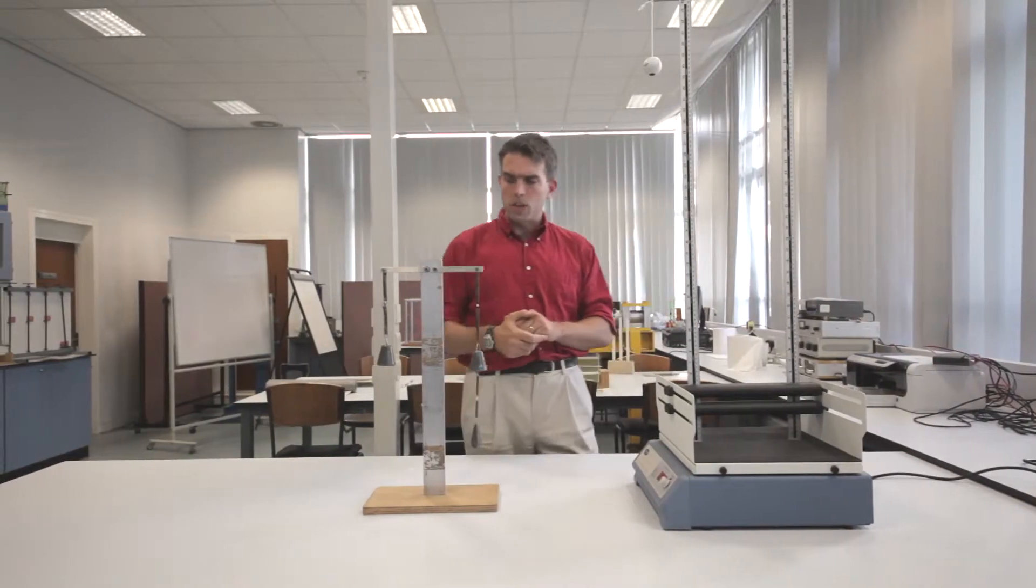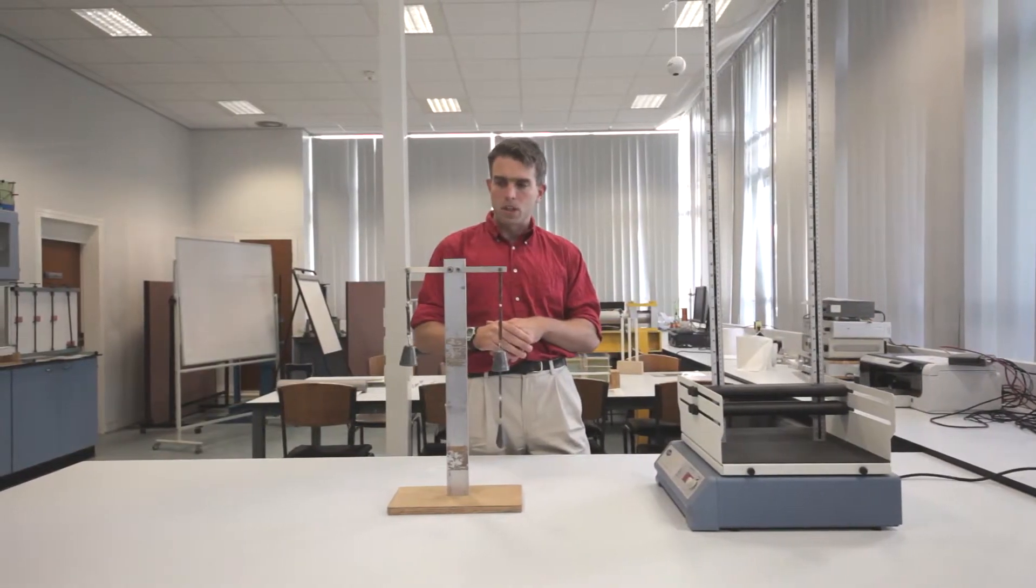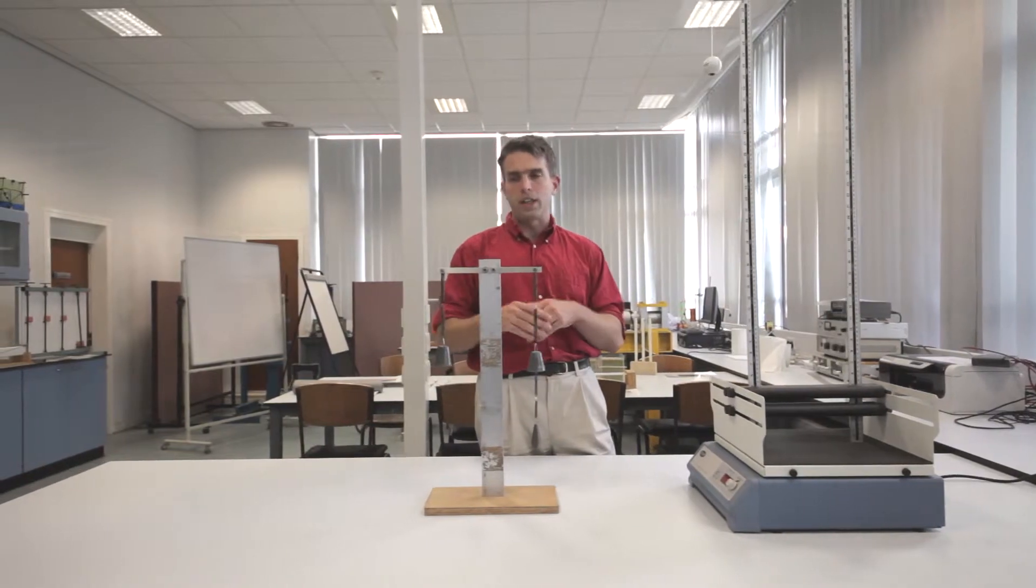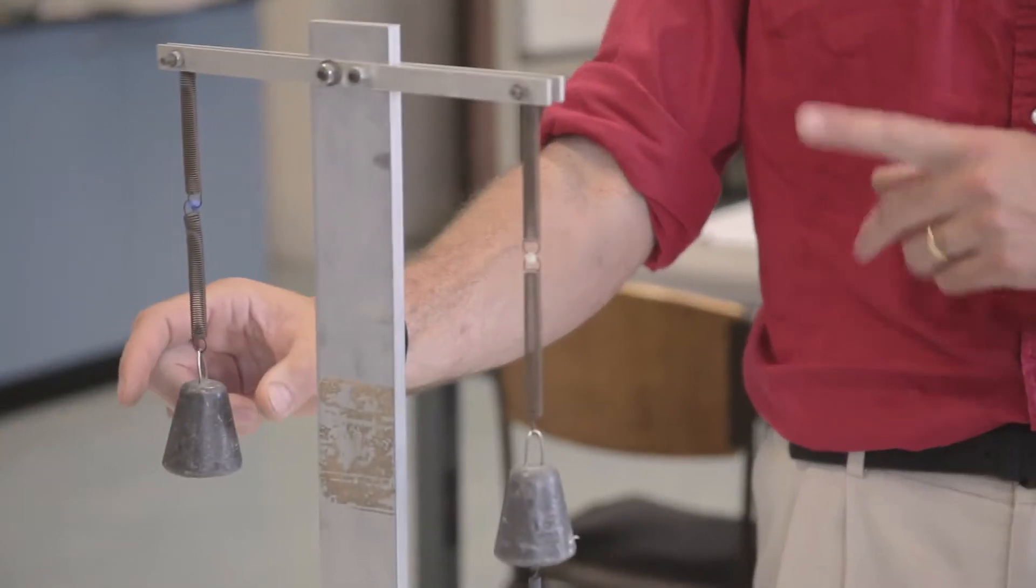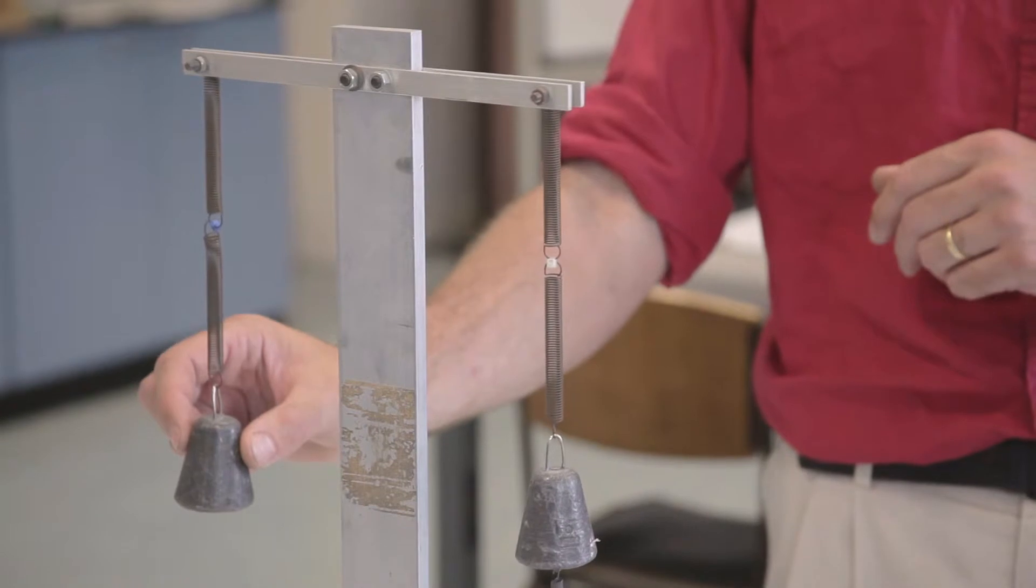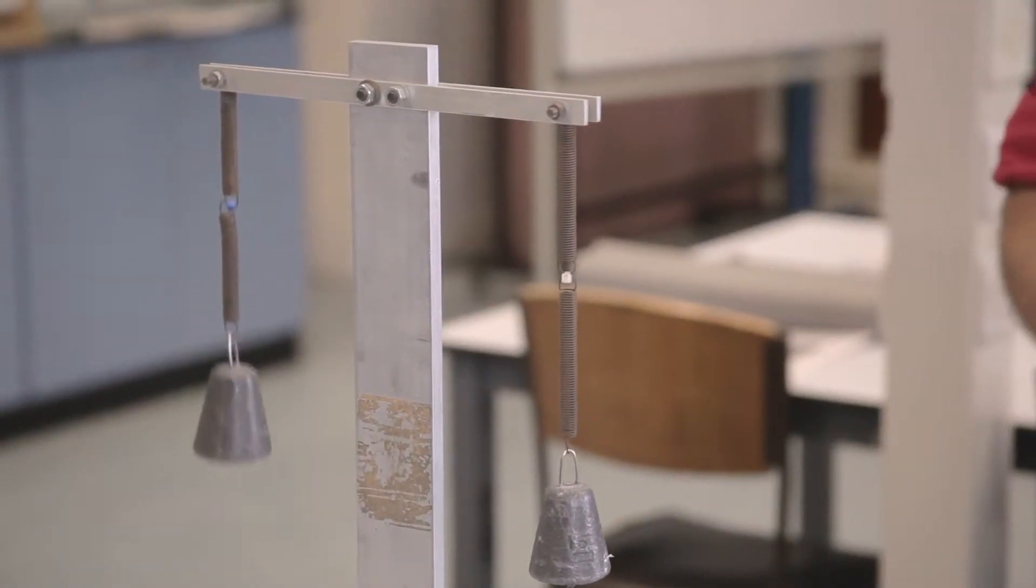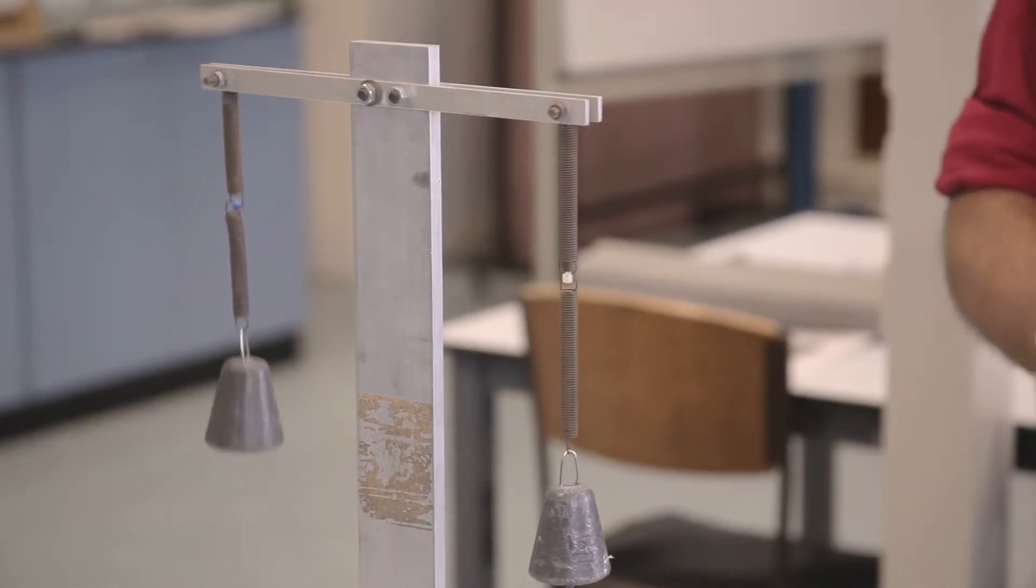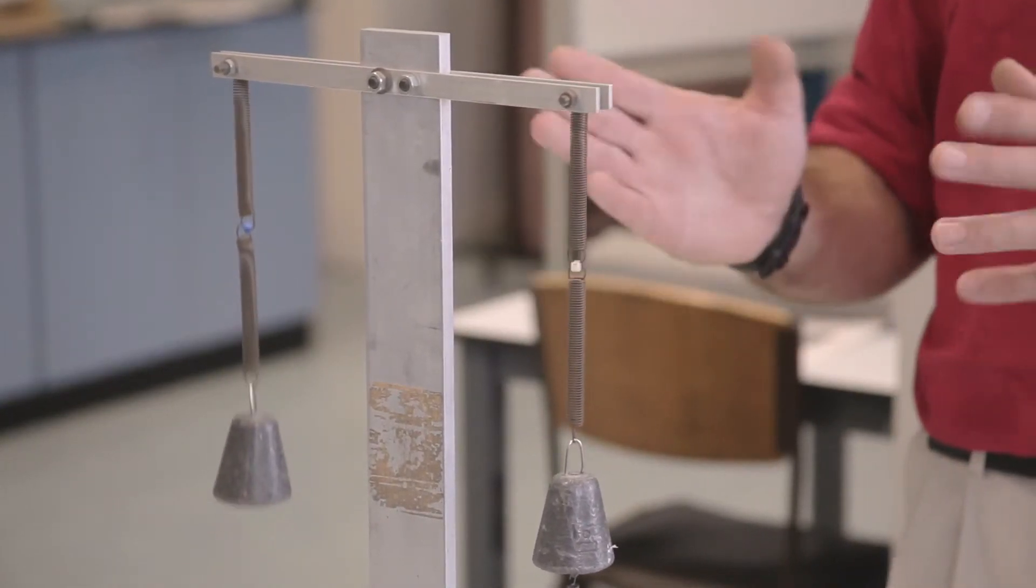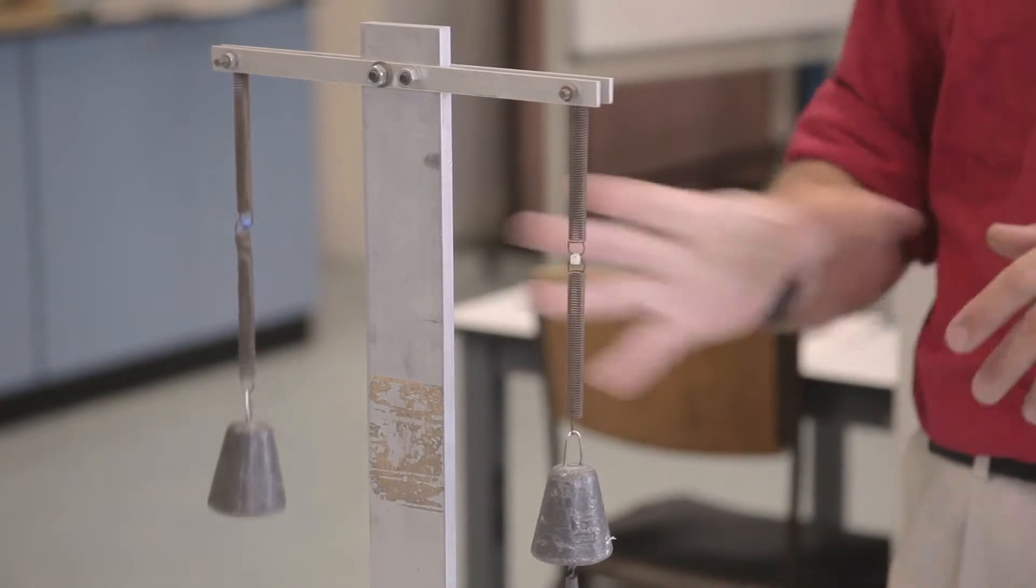So we'll start with this example here which is a very simple conceptual example of what happens when you get oscillations in a structure. So if you take the weight on the side here and just let it bob up and down, then it will keep doing that for a long time. There's not much stopping it, and you can imagine if that was a skyscraper shaking then that would be an unfortunate effect.